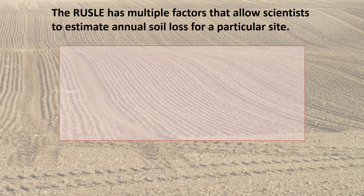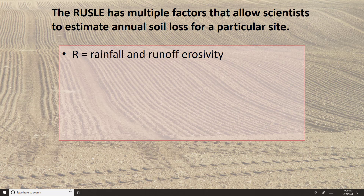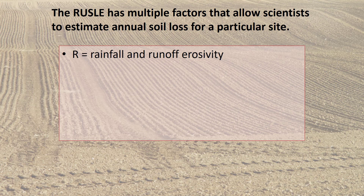The Revised Universal Soil Loss Equation has multiple factors that allow scientists to estimate annual soil loss for a particular site. R is the rainfall-runoff-erosivity factor — the average annual value for the erosion force of a particular rainfall. It is an indication of the amount of rainfall and the peak intensity sustained over an extended period. More rainfall increases runoff, and more intense rainfall has more kinetic energy, causing more soil to detach from the ground on impact.